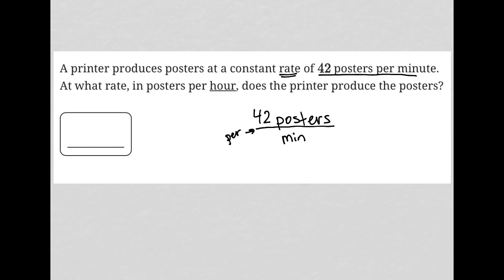At what rate in posters per hour does the printer produce the posters? Well, we have posters per minute. We know that number is 42, but we want posters per hour. So we want to get rid of this unit of minutes and convert it into hours.